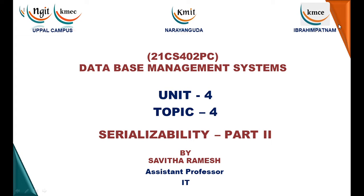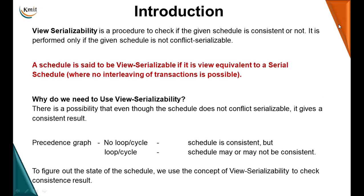Let's continue our discussion on serializability. In our previous session we discussed conflict serializability, where we used a precedence graph and saw that if there is no loop in the graph, then we say it is conflict serializable and we can assure a consistent result. But if there is a loop, we can't say — we just say it is not conflict serializable, though even in that case the schedule may give a consistent result.